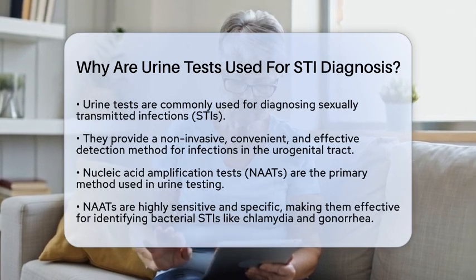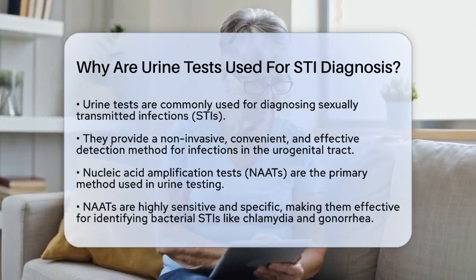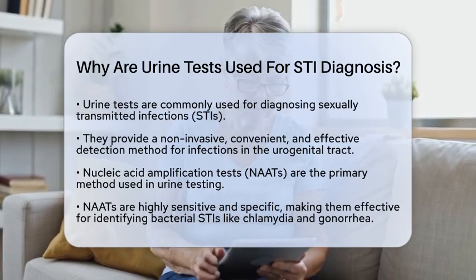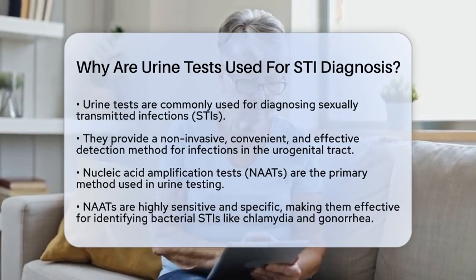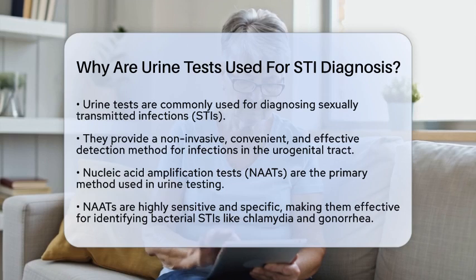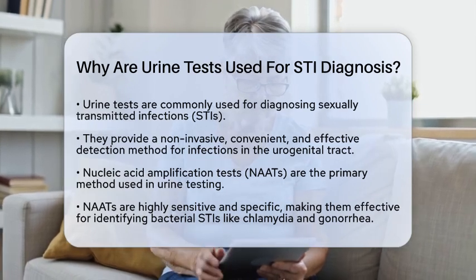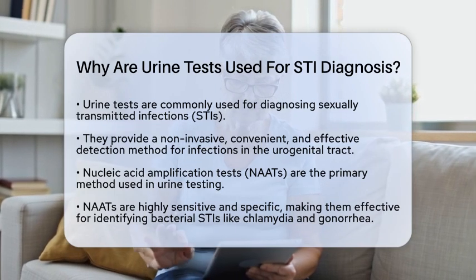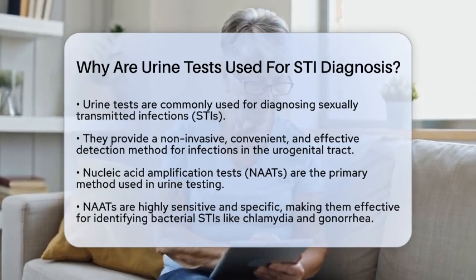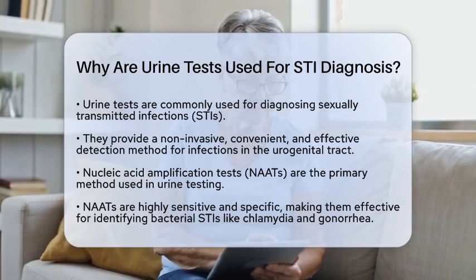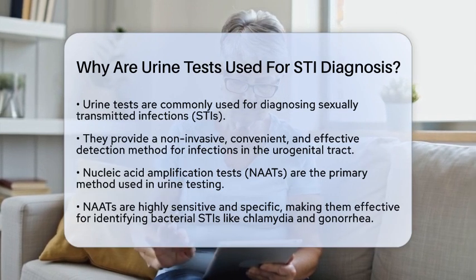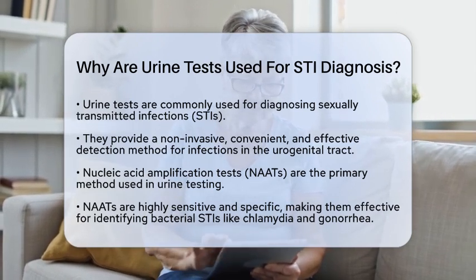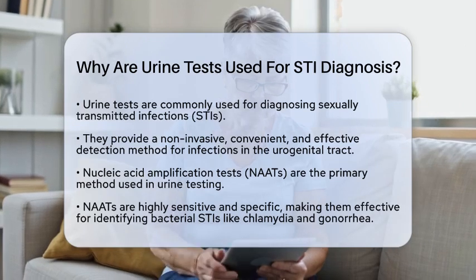One of the main methods used is called nucleic acid amplification tests. These tests are highly sensitive and specific, making them excellent for identifying common bacterial sexually transmitted infections like chlamydia and gonorrhea. They work by detecting the genetic material of the pathogens in the urine, allowing for accurate diagnosis without needing more invasive swabs in many cases.